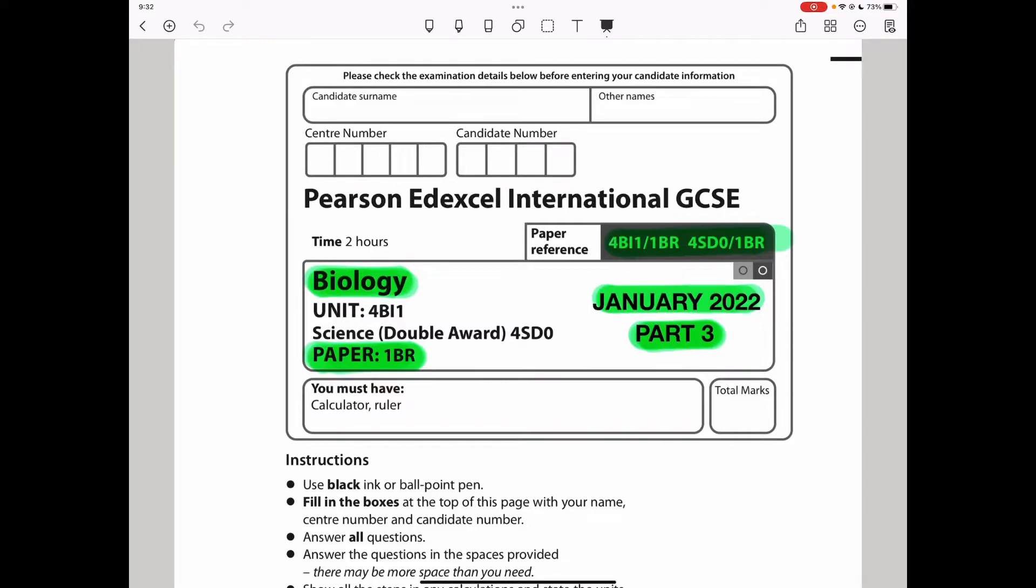Welcome to the Chemistry, Biology, and Math Revision Hub. This is the Pearson Edexcel International GCSE Biology Paper 1BR for January 2022, Part 3.